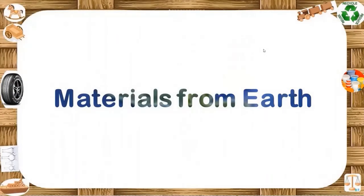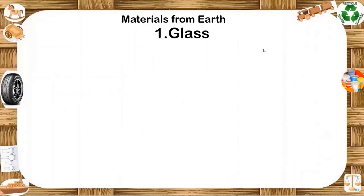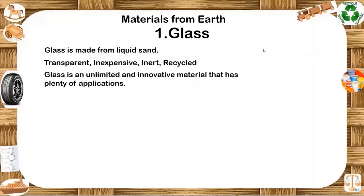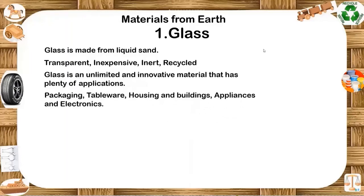Glass is made from liquid sand. Glass is such a popular material in our homes because it has all kinds of useful properties. Apart from being transparent, it is inexpensive to make, easy to shape when molten, and has reasonable resistance to heat when set. It is chemically inert — a glass jar doesn't react with the things you put inside it — and it can be recycled any number of times. Glass is an unlimited and innovative material with plenty of applications. In packaging, we use glass for jars for food, bottles for drinks, flacons for cosmetics and pharmaceuticals.